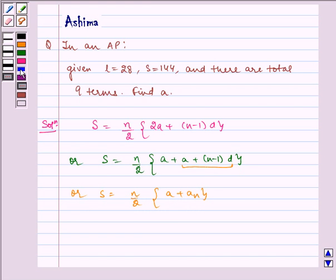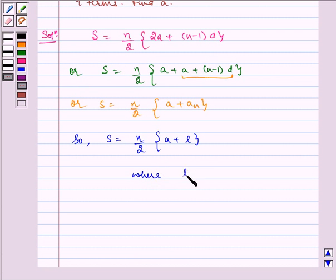Now, if there are only N terms in an AP, then AN is equal to L, where L is the last term. So S is equal to N by 2, A plus L, where L is the last term.